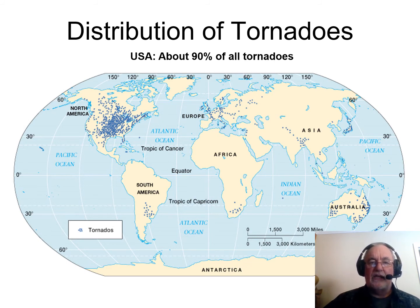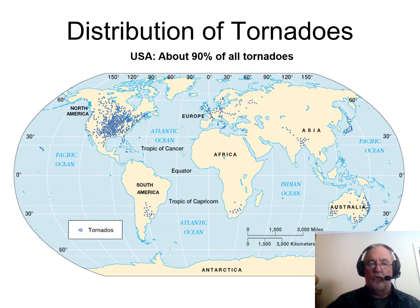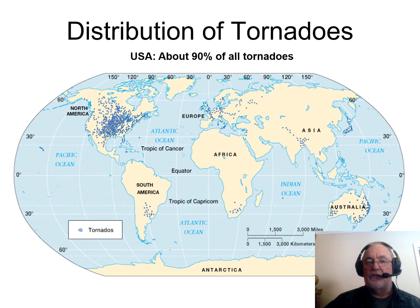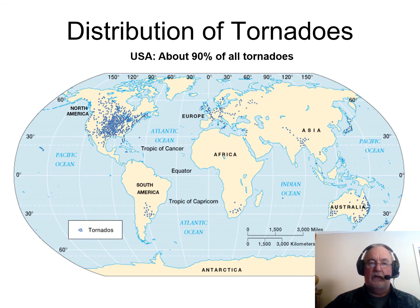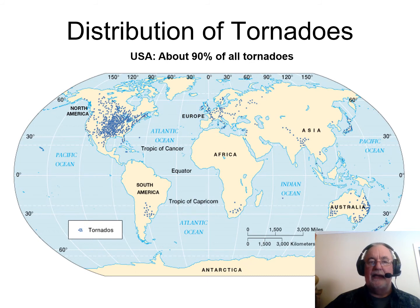Why so many in the USA? The greatest ingredient is cold, dry air mixing with warm, moist air. East-west oriented mountain chains like the Alps in Europe tend to block those air masses from mixing. The US lacks a large east-west topographic barrier, so cold air from Canada can sneak south into the central US in springtime while warm, moist air from the Gulf of Mexico moves north into the same area, allowing them to mix in the Southern Great Plains.